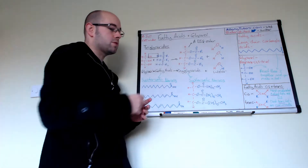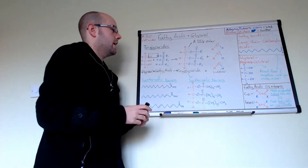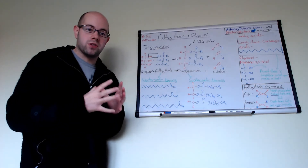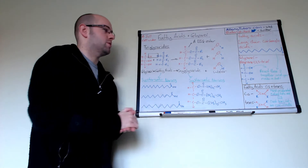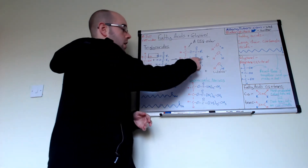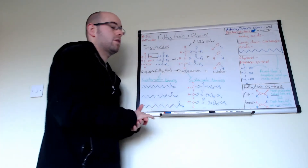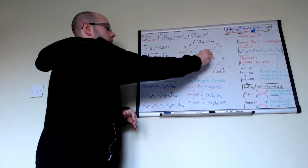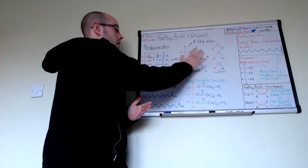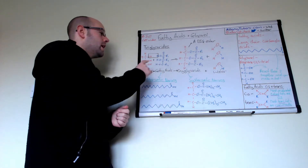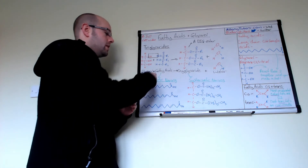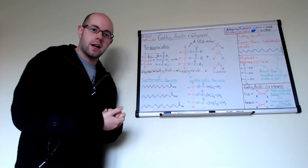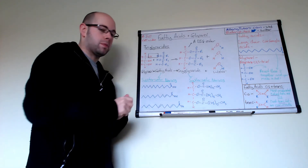Triglycerides can be used as fuels — this is effectively a fat and is almost solid. Fats have high melting points. The R group represents a long hydrocarbon chain, which could be 14, 16, or 20 carbons long — these are really big, long molecules, and you are expected to know where these come from. This is particularly relevant if you're doing OCR chemistry.